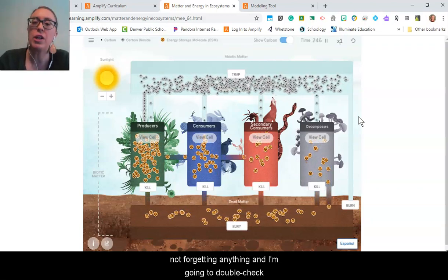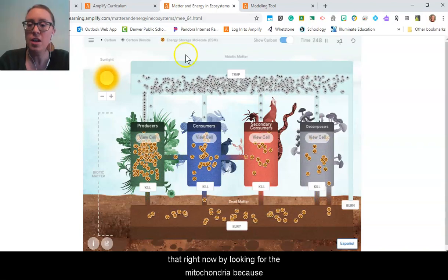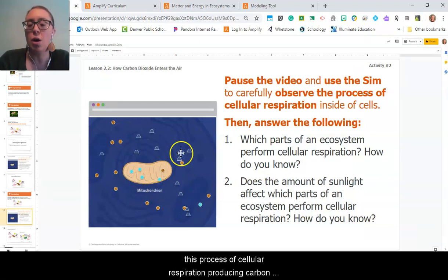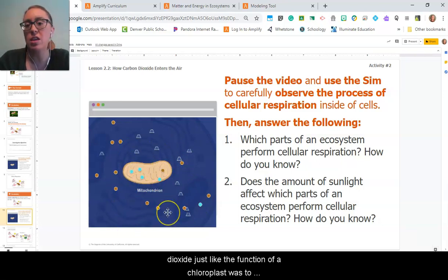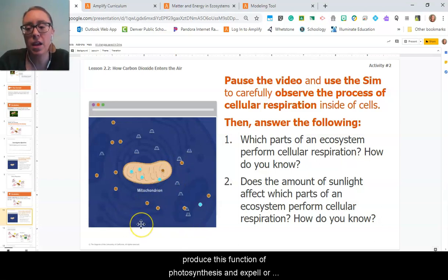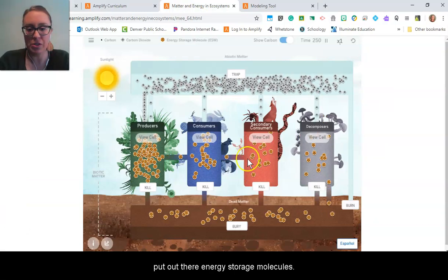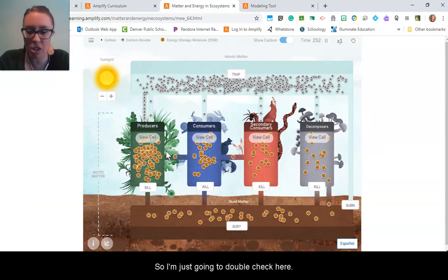I'm going to double check that right now by looking for the mitochondria, because I just determined that the function of a mitochondria is this process of cellular respiration producing carbon dioxide, just like the function of a chloroplast was to produce this function of photosynthesis and expel or put out their energy storage molecules. So I'm just going to double check here.